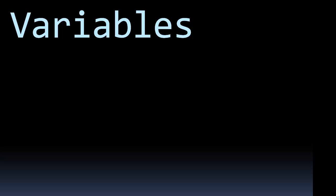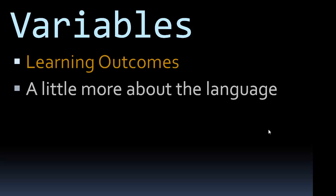Our learning outcomes for this lesson: we'll look at a little bit more about the C-Sharp language. C-Sharp is considered a managed code environment, which means the memory management is automatic. C-Sharp is also a compiled language, so there's an extra step where we compile the code into machine code before we run it. That's unlike PHP, which is considered an interpretive language.